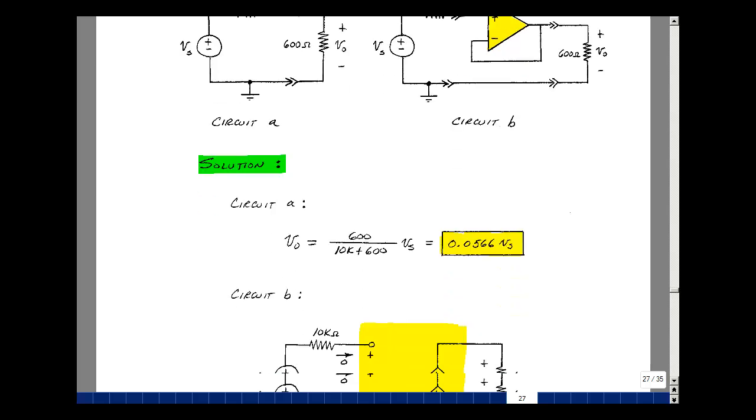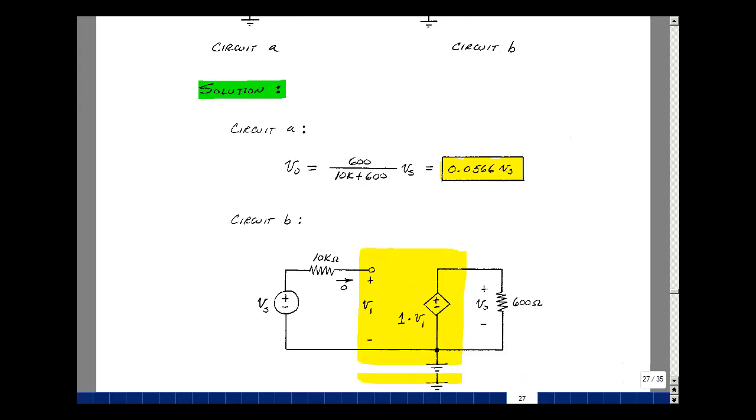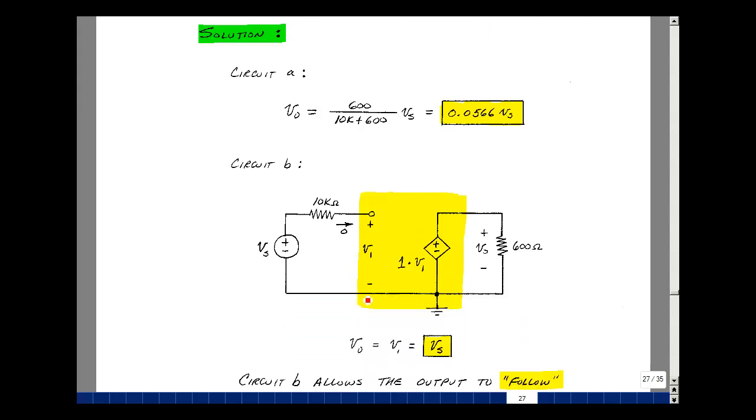Now we have a model for a non-inverting amplifier. So let's put it in. Here's my input connected here. Here's my output, and the gain is 1 plus 0 divided by infinity. So the voltage here is multiplied by 1. So now the voltage at the output is just simply equal to V1. And since there's no current here, there's no drop across this resistor. This is equal to V-sub-S. The output equals the input.